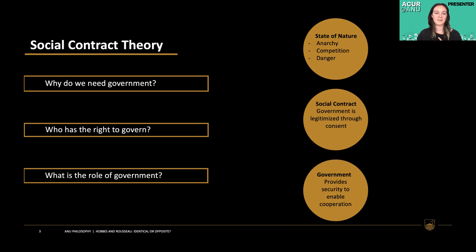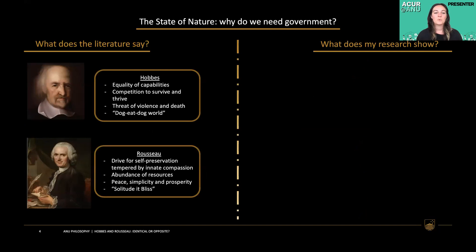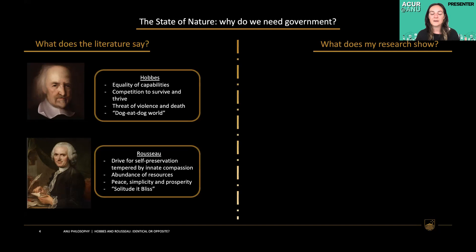What does the literature say on Hobbes and Rousseau's conceptualisation of the state of nature? Hobbes is said to produce a very bleak understanding — a war of everybody against everybody, where everybody has equal capabilities and is equally competitive for resources; a dog-eat-dog kind of situation. Rousseau criticises Hobbes for imbuing societal passions such as greed and violence onto the natural man, saying these characteristics only emerge when society starts to develop. Rousseau paints a much more favourable picture — like a Garden of Eden — with little interaction between people, an abundance of resources, and no violence.